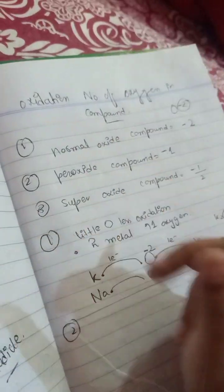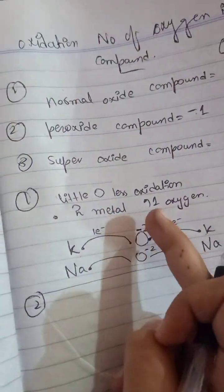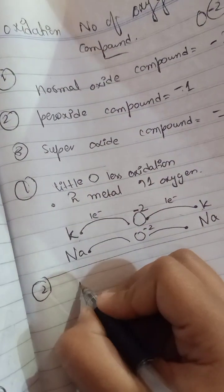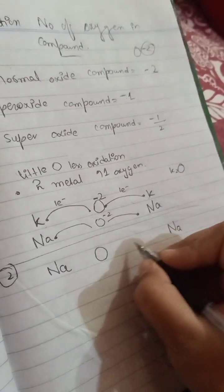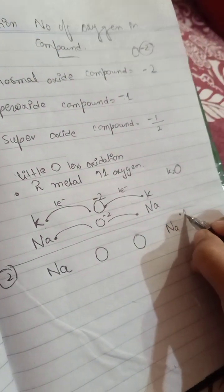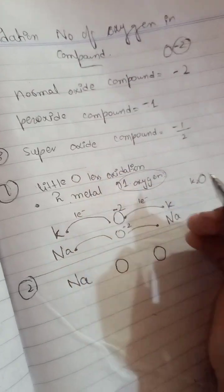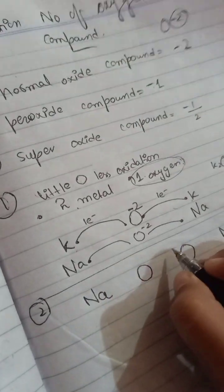Now let's take the example of the peroxide compound, which has a slightly higher concentration of oxygen than the normal oxide. For example, one metal with two oxygens — here two metals with one oxygen means low oxygen concentration, while one metal with two oxygens means a higher oxygen concentration.